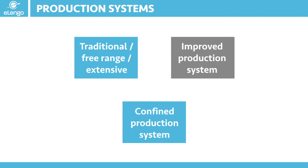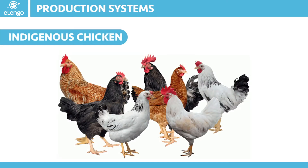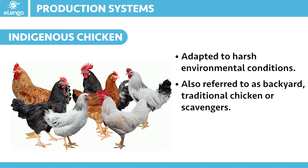We are first of all going to start by looking at what is an indigenous chicken. We could have heard the word before but probably don't fully understand it. An indigenous chicken is a chicken that is adapted to harsh environmental conditions. They would also be referred to as the backyard chicken, traditional chicken, scavenged chicken, the village chicken, the local or family chicken. A lot of us have different names for them in our different communities, backgrounds, and countries.